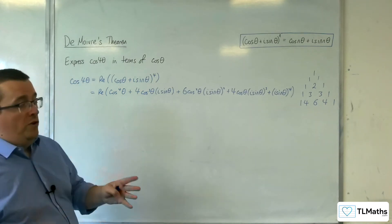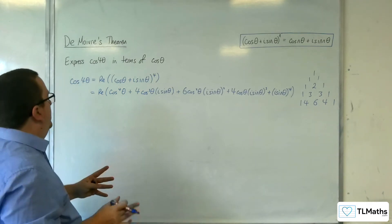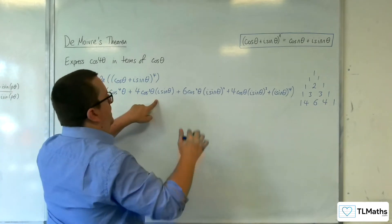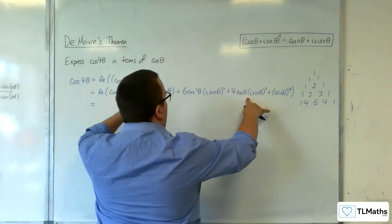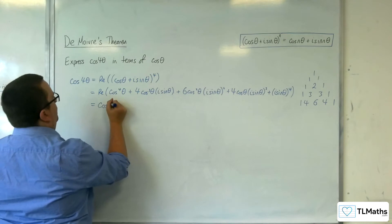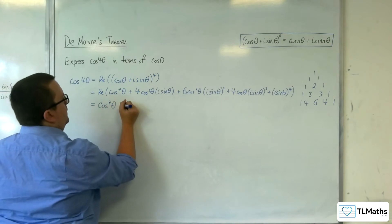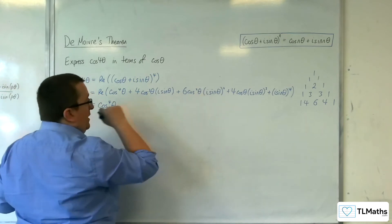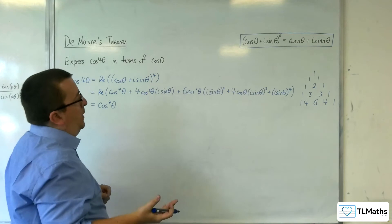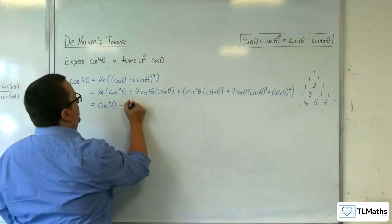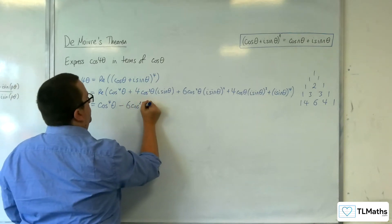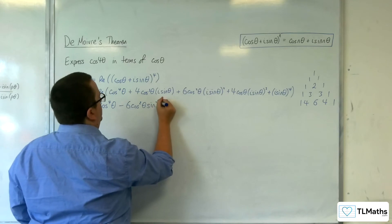And we just want the real parts. So we can ignore that term and that term, leaving us with cosine to the 4 theta. And that term there — now i squared is minus 1 — so we're going to have minus 6 cosine squared theta sine squared theta.